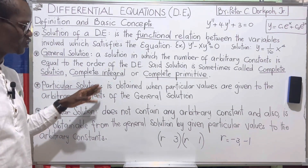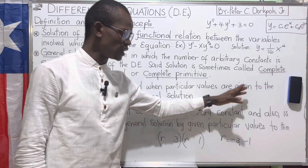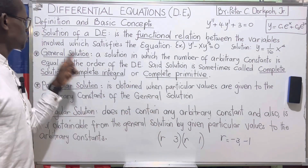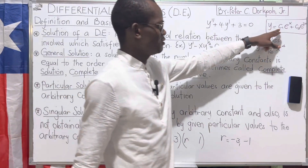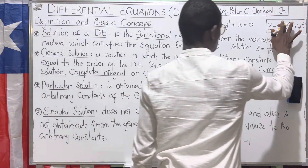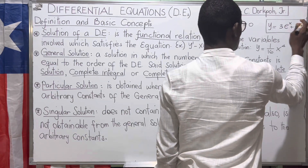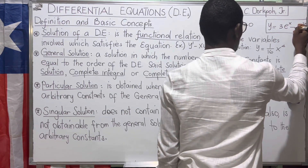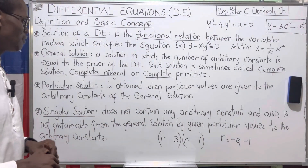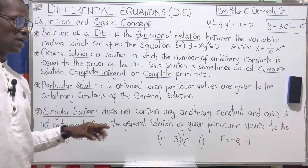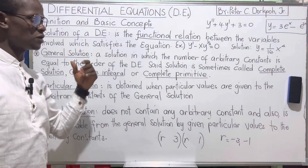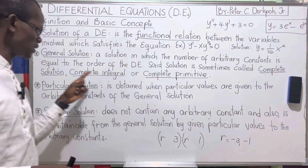The particular solution is obtained when particular values are given to the arbitrary constants of the general solution. For example, from the general solution, if you solve for c₁ and get 3, and solve for c₂ and get -1, you substitute those values in to obtain the particular solution. This new solution is derived directly from the general solution by substituting the constants.